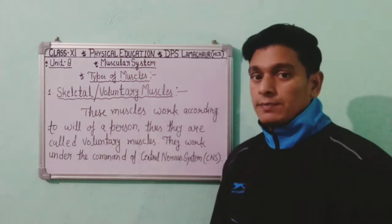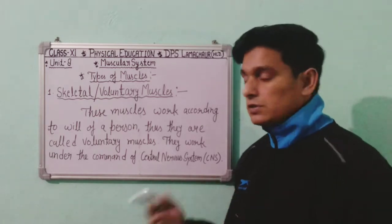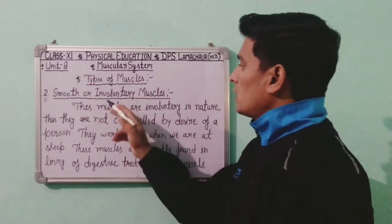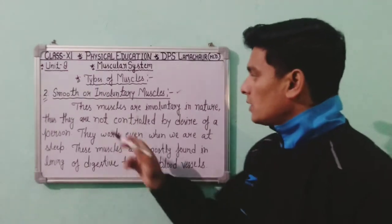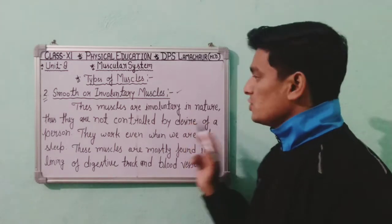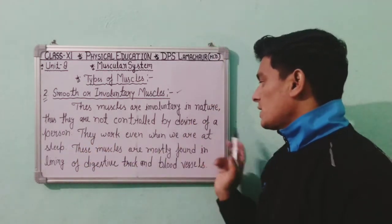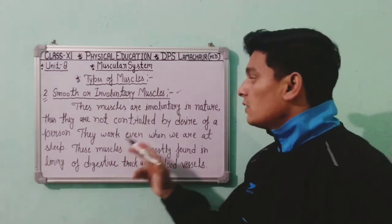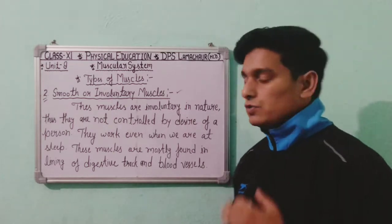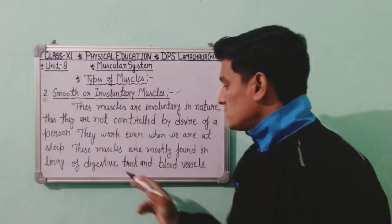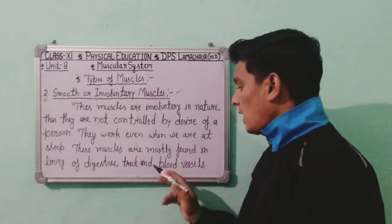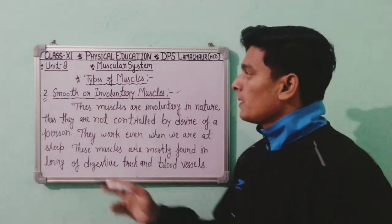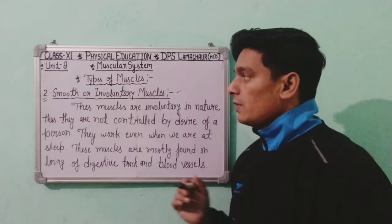The second type of muscle is smooth or involuntary muscle. These muscles are involuntary in nature — they are not controlled by the desire of a person, meaning we cannot control their work. They work even when we are asleep. These muscles are mostly found in the lining of the digestive tract and blood vessels.